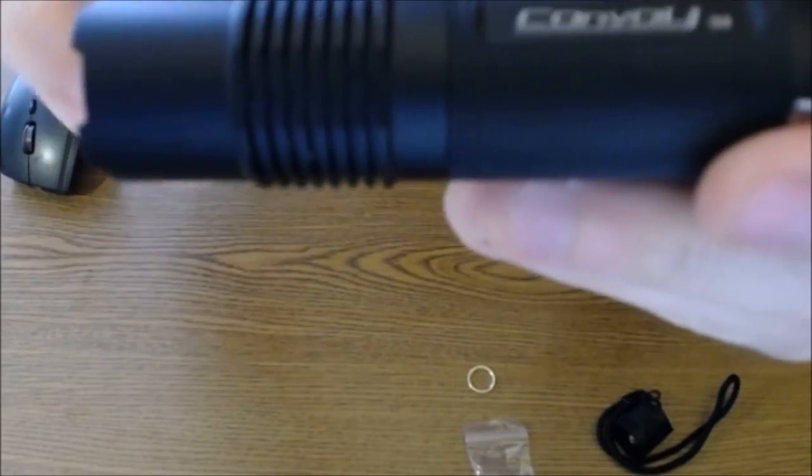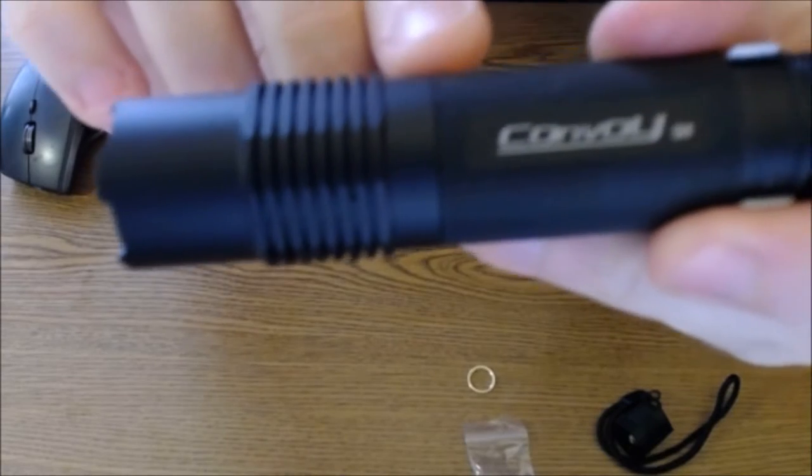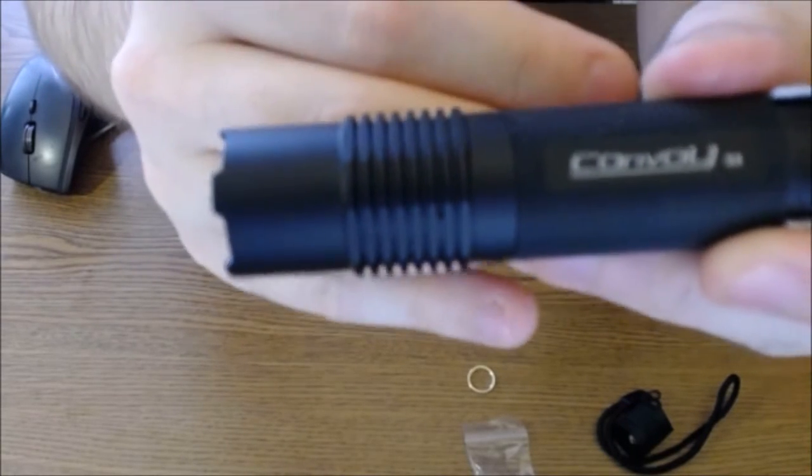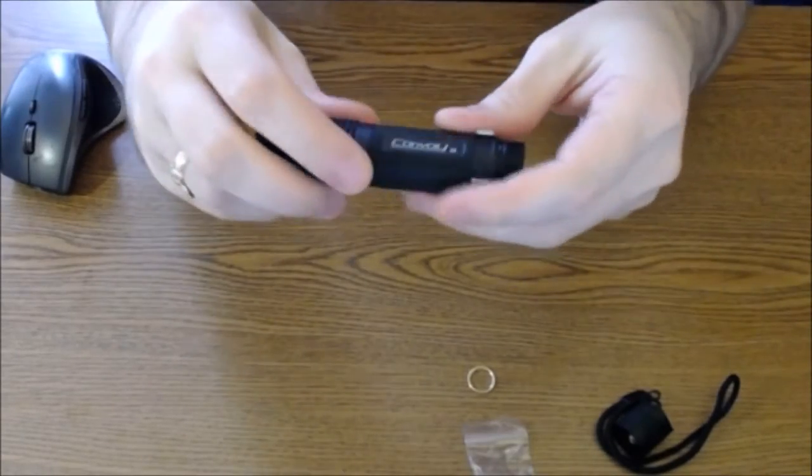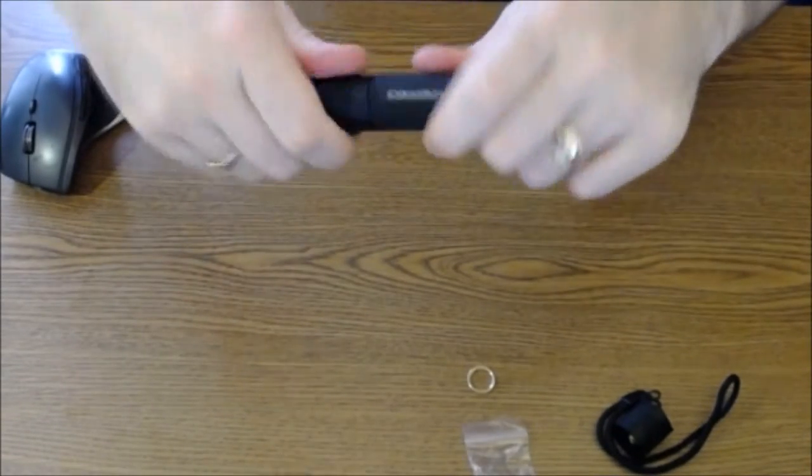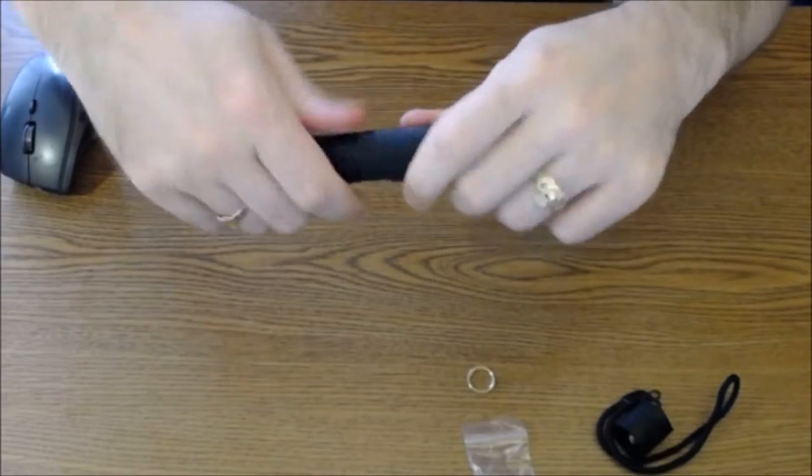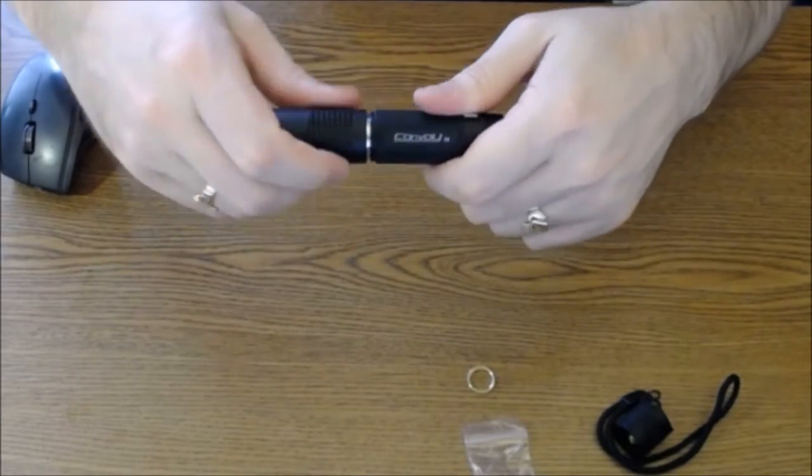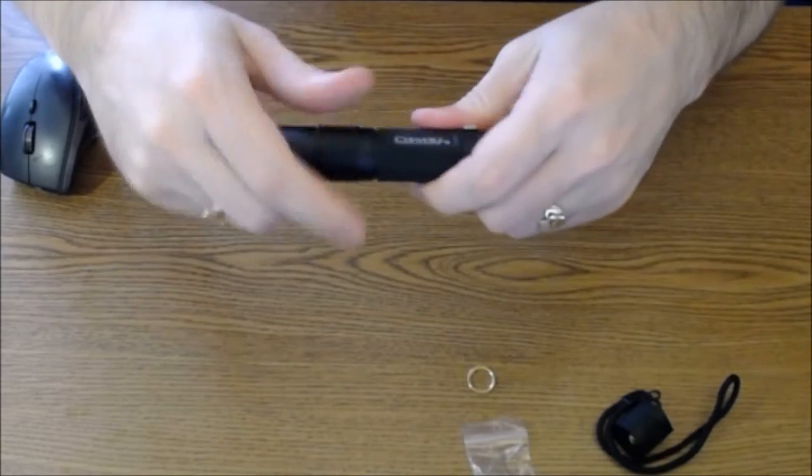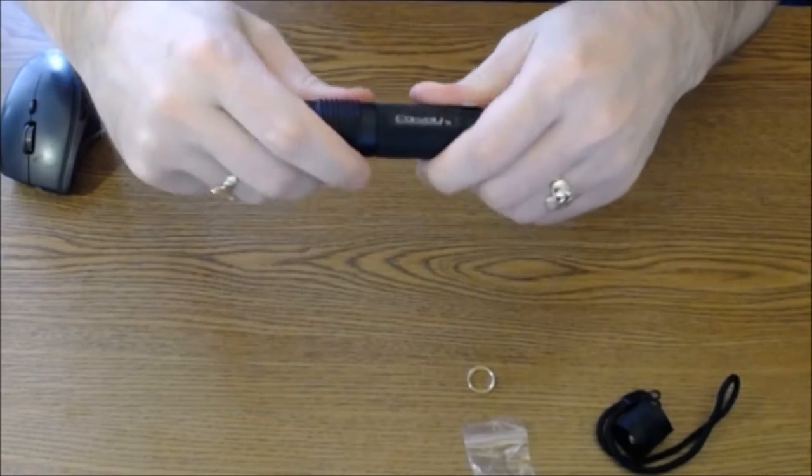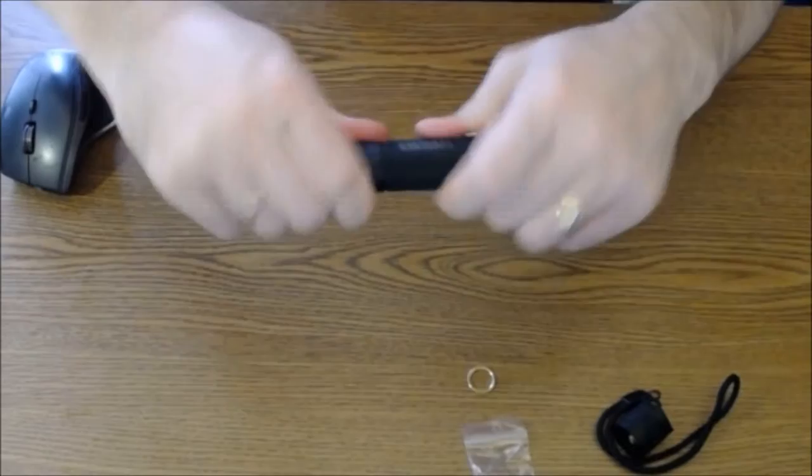This was another thing that I noticed, was just how tight this join is right here. Let's see if I can get that to focus. The join is really smooth right there. So you almost don't even know that the flashlight comes apart right there. And again, the threads here just feel great. It's quite loose to start, and then as you clamp it down, you can feel it firm up. It's a nice gradual process and it just feels phenomenal.